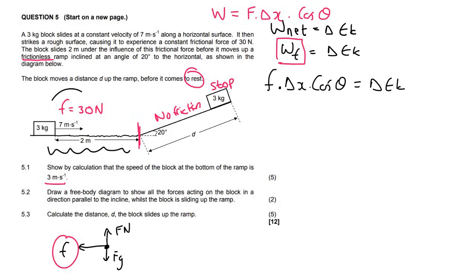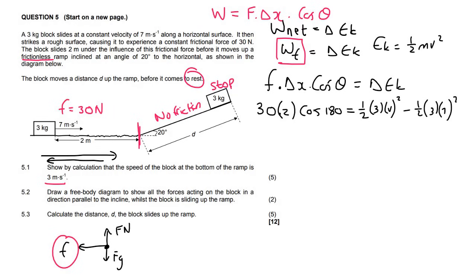We're going to say the force of friction multiplied by delta X multiplied by cos theta equals to delta EK. The force of friction they told us in that area was 30 newtons. The distance that we are moving is 2 meters. And if we're moving to the right, friction is acting to the left, so that means we're going to say cos of 180. The change in kinetic energy is a half mv squared. The mass is 3, the final velocity we don't know, the initial velocity is 7.